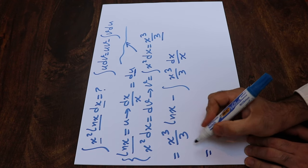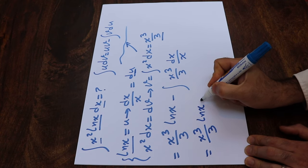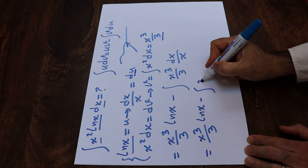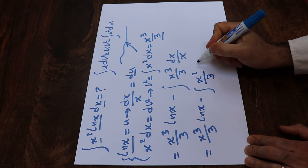Therefore, this integral will be equal to x³ divided by 3 times ln(x) minus the integral of x³ divided by x, which will be x², and then divided by 3 dx.